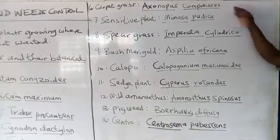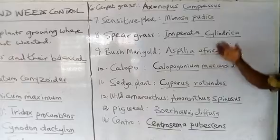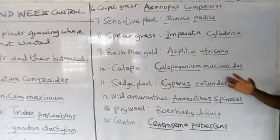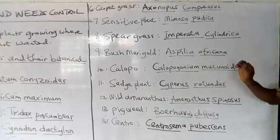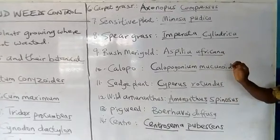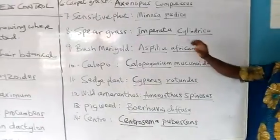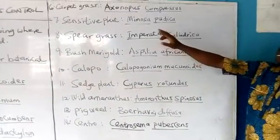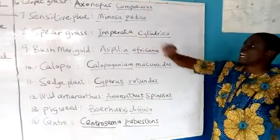We have Sensitive weed. In the local parlance they call it 'touch weed' — you touch it and it tends to fold its leaves. It also has small spikes on it. It is called Mimosa pudica.